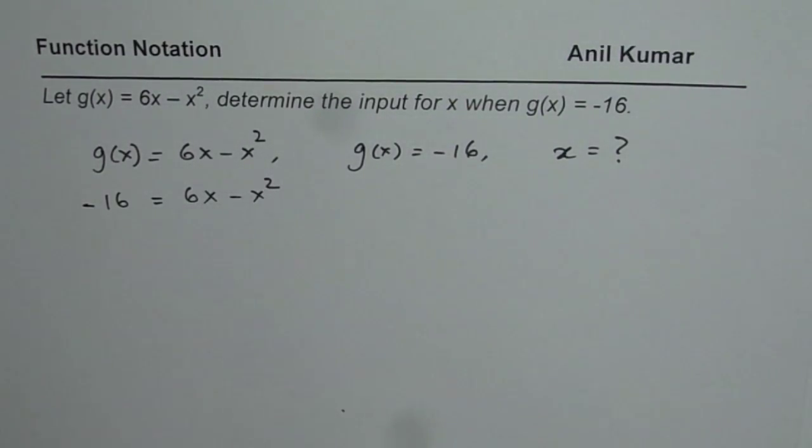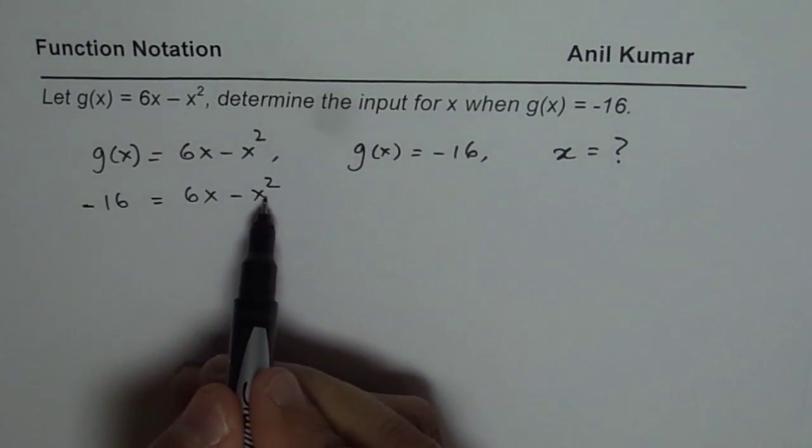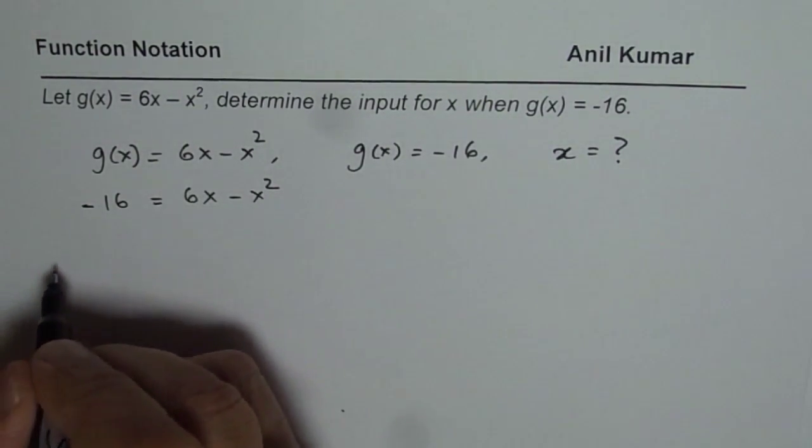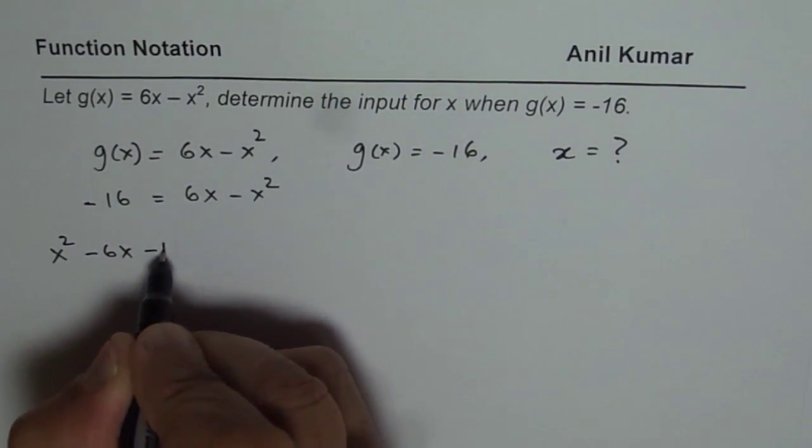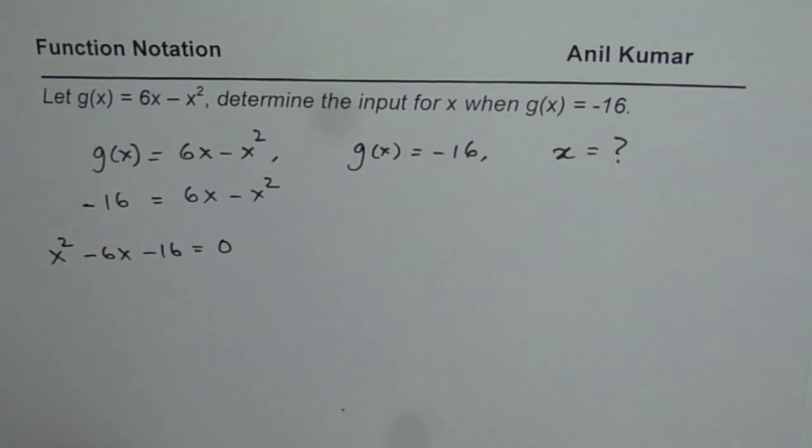From this equation, we need to find the value of x. That is to say, to solve a quadratic equation. Let us bring all the terms to the left side. We get x squared minus 6x minus 16 equals to 0.